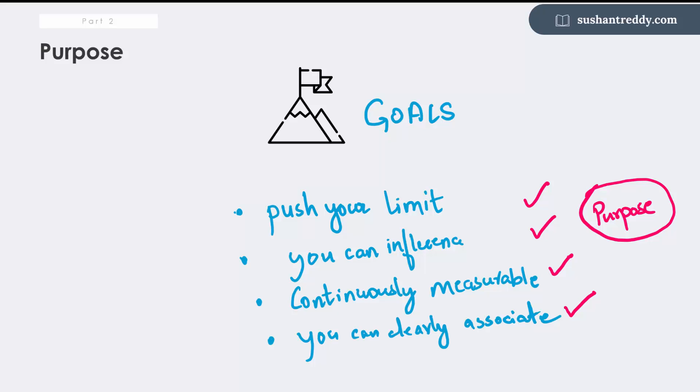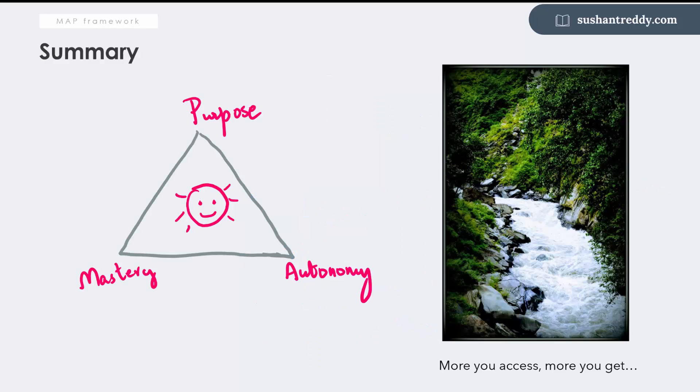So the next time you're confused about whether what you're doing is your purpose or not, you could possibly measure on these four metrics. To summarize, if you effectively build a MAP, you will access the deep reservoir of motivation that never exhausts.